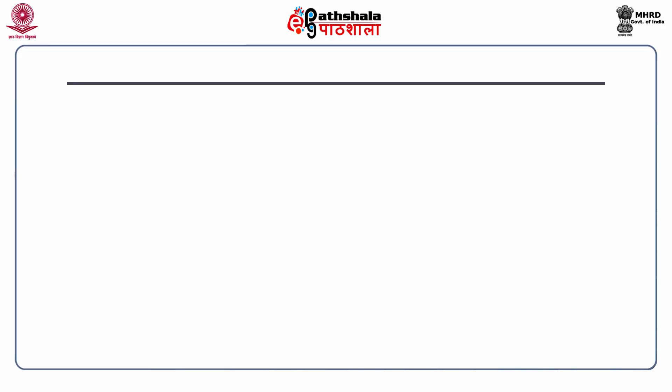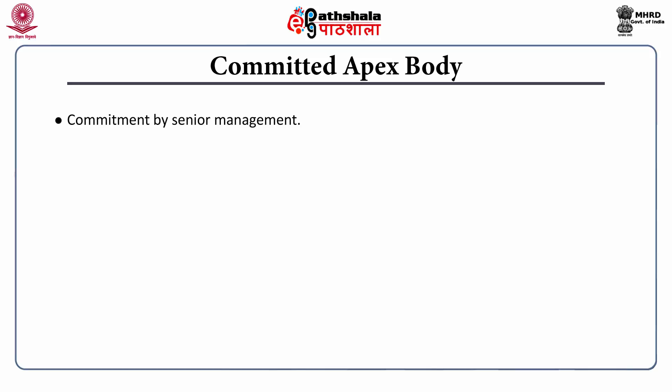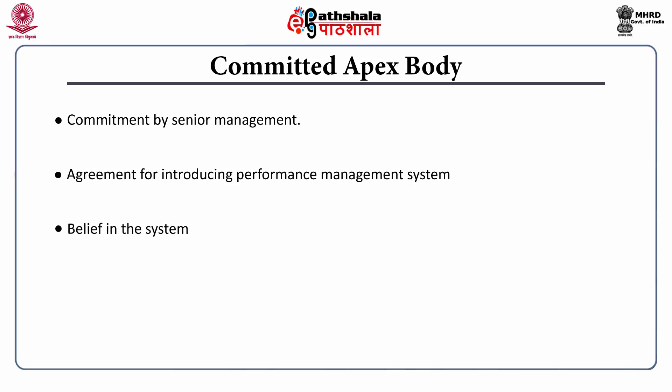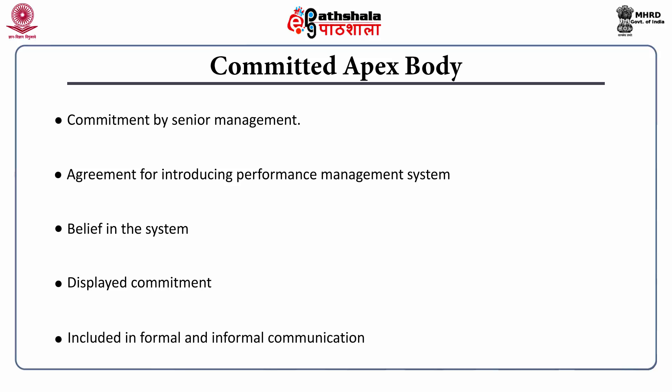The first essential is committed apex body. The senior management of the organization must ensure that they themselves are committed towards improvement of performance. They must be convinced of the basic idea of introducing performance management system in the organization. They should also believe that a systematic approach is the correct way of improving performance. Their commitment must be displayed in their actions. If the top management is committed and displays the same through their behaviors, it will give a positive message down the line and indicate that performance would not be compromised at any cost. The top management should mention in their formal and informal communication with all levels about the relevance of better performance.